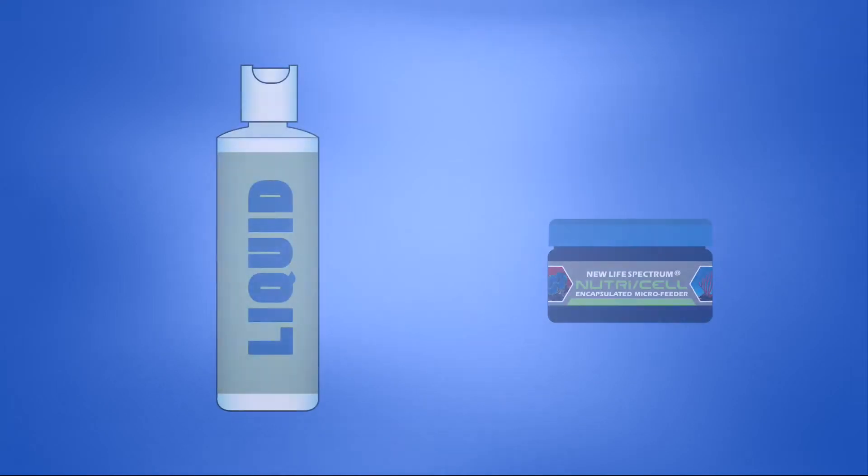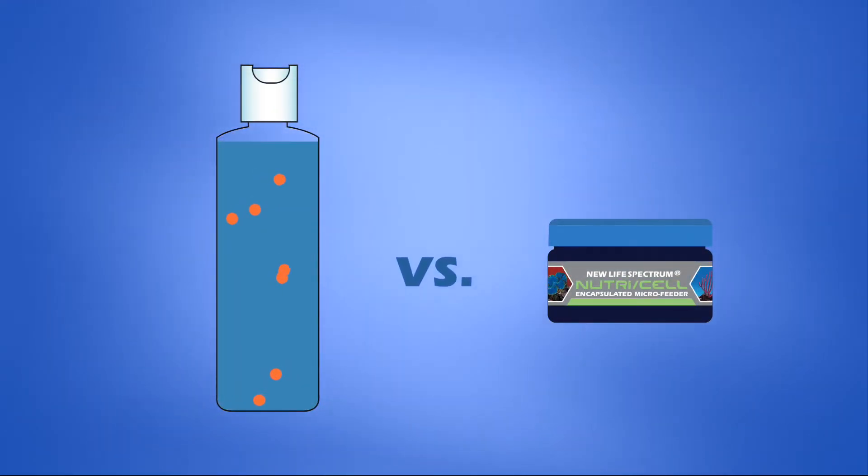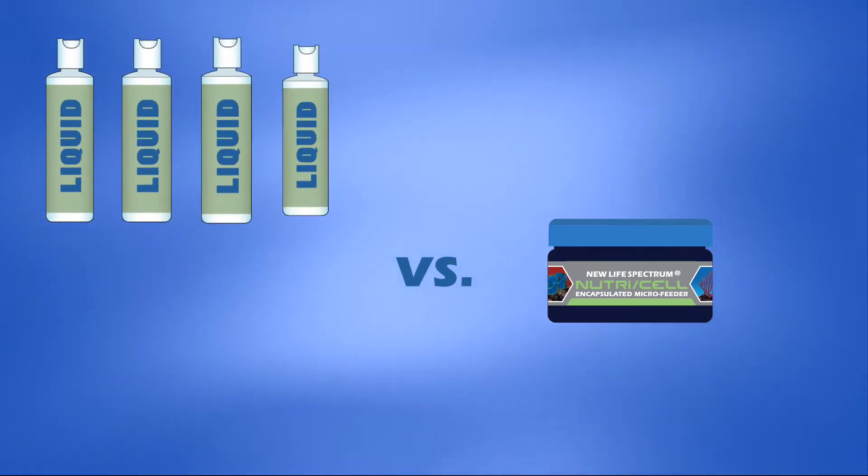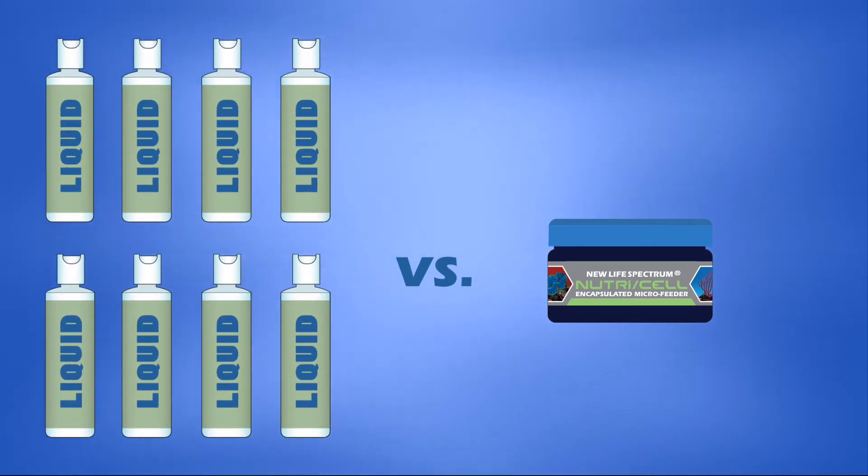In fact, with most liquid coral food products, you are paying for 90% water plus the additional inconvenience of storage. One jar of New Life Spectrum NutriCell provides as much food as several bottles of liquid suspensions, making NutriCell economical, too.